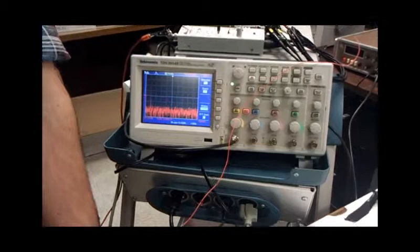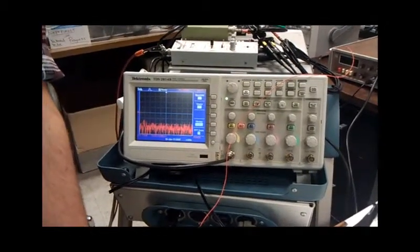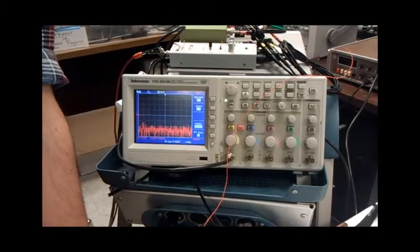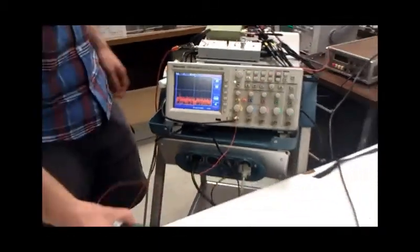And there it is. The spectrum has mostly flattened out. The 60 Hz has dropped significantly, which means we're actually measuring the fields. Our probe works, our oscilloscope works, and the mu-metal works.